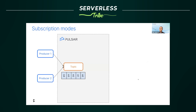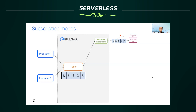A subscription type is a function of the consumer — the producer doesn't need to worry about whether the use case is streaming or messaging. Messages in the topic can be consumed in different ways. When you need to process messages in the right order, you can use the exclusive mode. In this mode, only one consumer exists at a time — Pulsar enforces this. You'll get an error if you try to add another consumer to the same subscription, ensuring you receive messages in the right order.